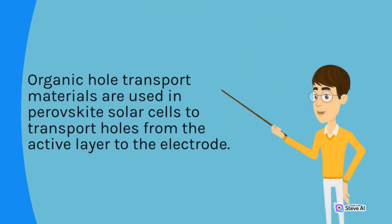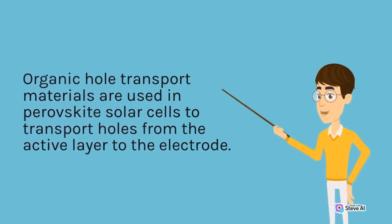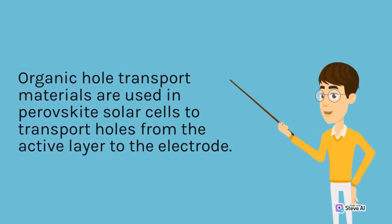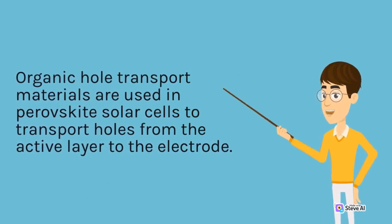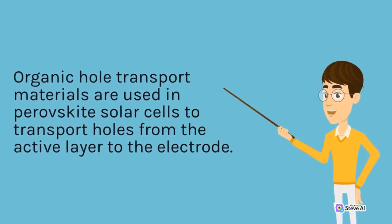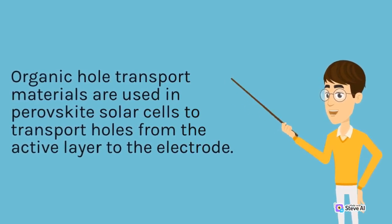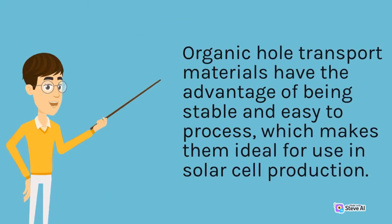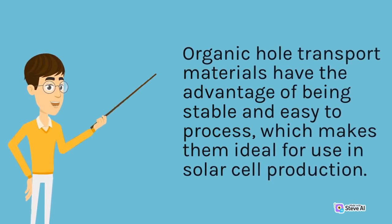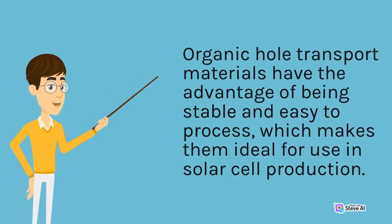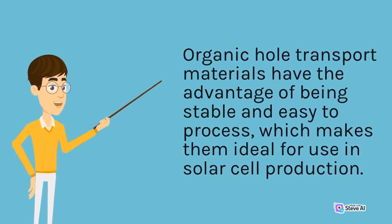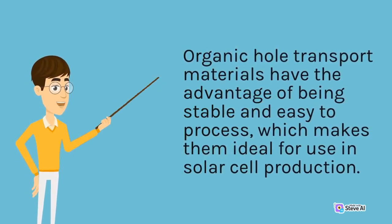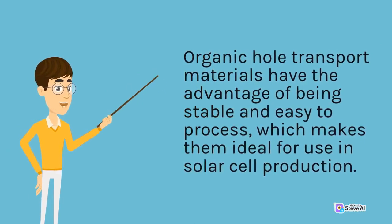Organic hole transport materials are used in perovskite solar cells to transport holes from the active layer to the electrode. They have the advantage of being stable and easy to process, which makes them ideal for use in solar cell production.